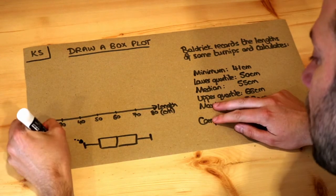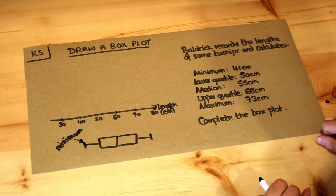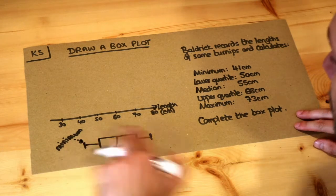Now at the bottom, this whisker will be the minimum value. So in this particular scenario, if you've got Baldrick recording lengths of turnips, it will be the minimum length of turnip.